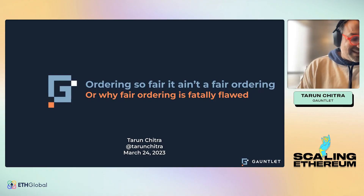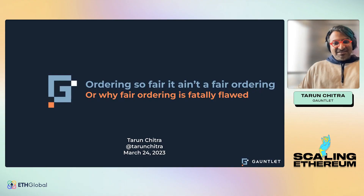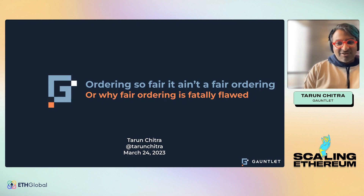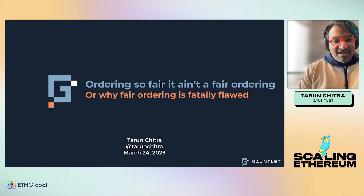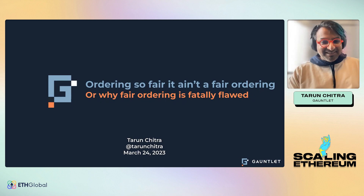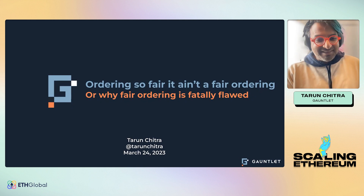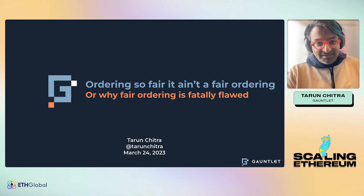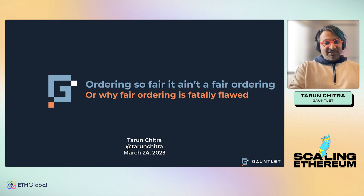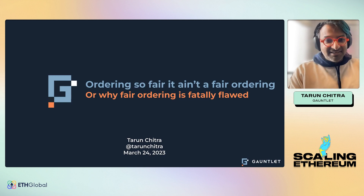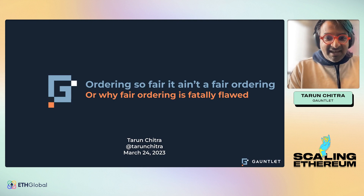I want to talk a little bit about the flaws of fair ordering. This is not meant as an attack on any of the people who've worked on it before. There's a really interesting idea in social choice theory to apply to blockchains to make them more fair, but I think there's no way of doing it in the way that people have tried. There might be some other approaches — hopefully we'll end with some positive notes — but before that, let's bring out the hatchet.